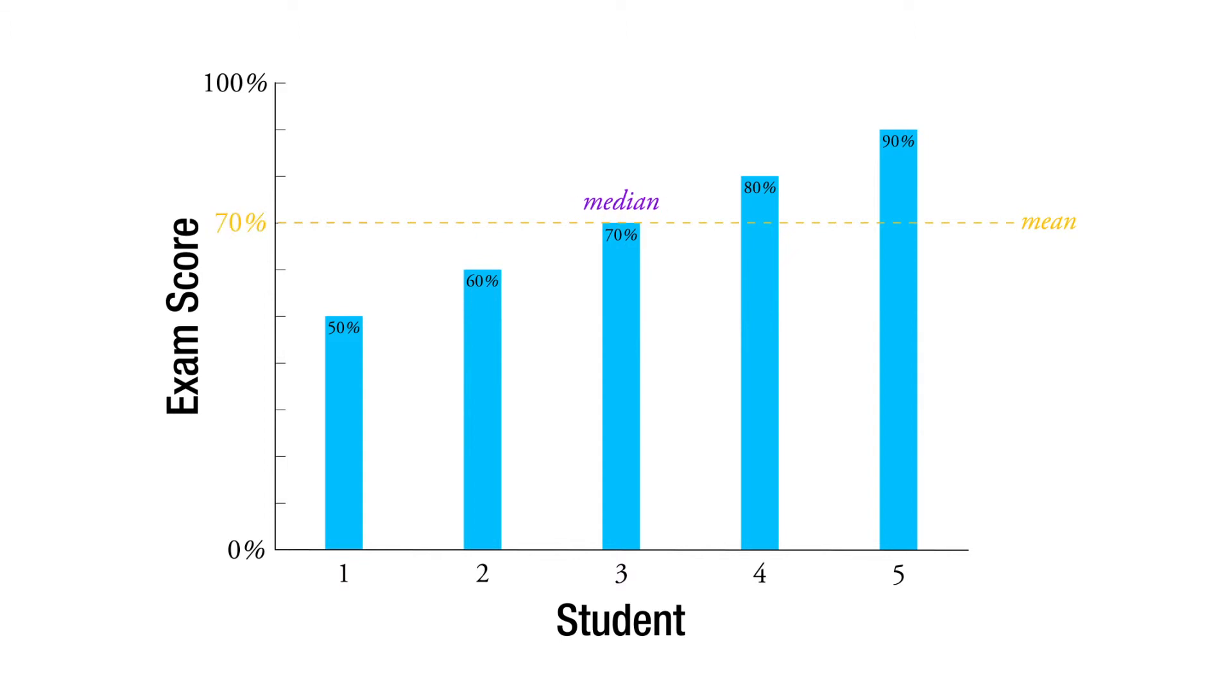But if we have an outlier, let's say we pull this one down. This guy really flubbed the test and only got a 10. When he does that, he's going to pull the mean all the way down to 62.